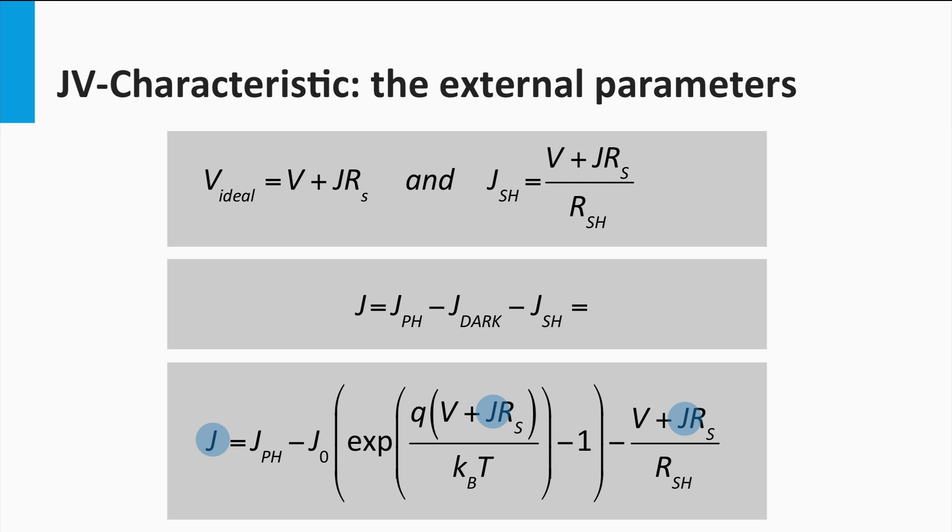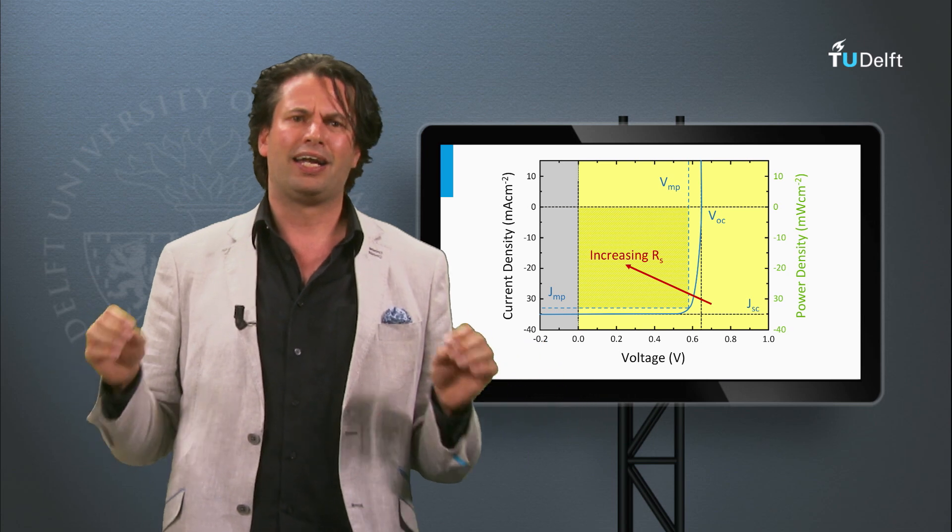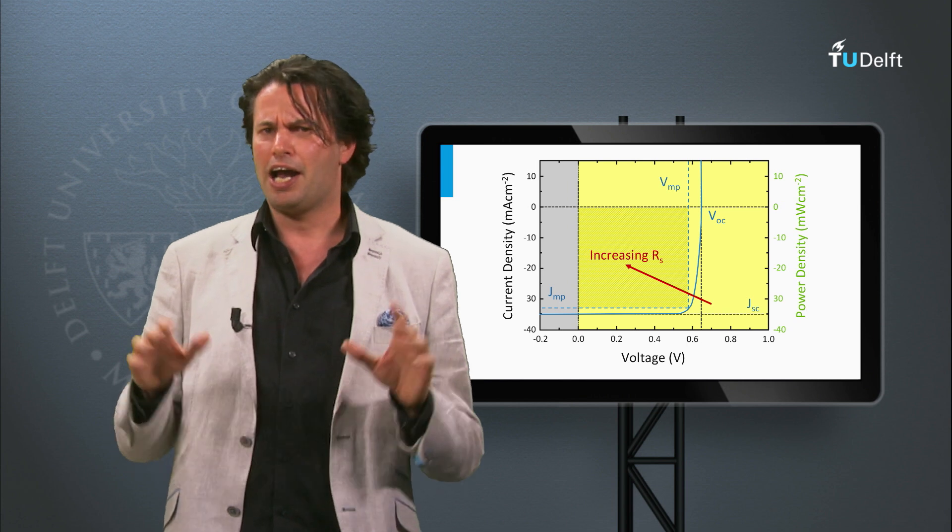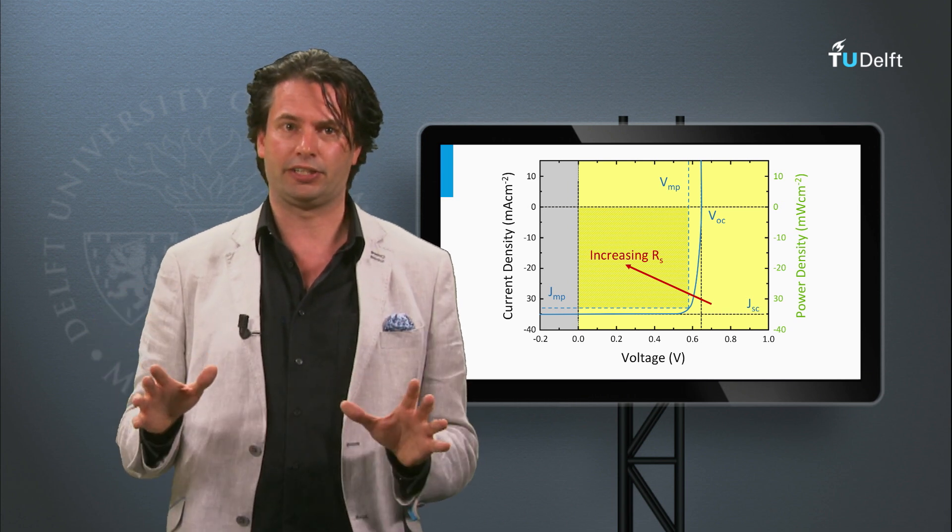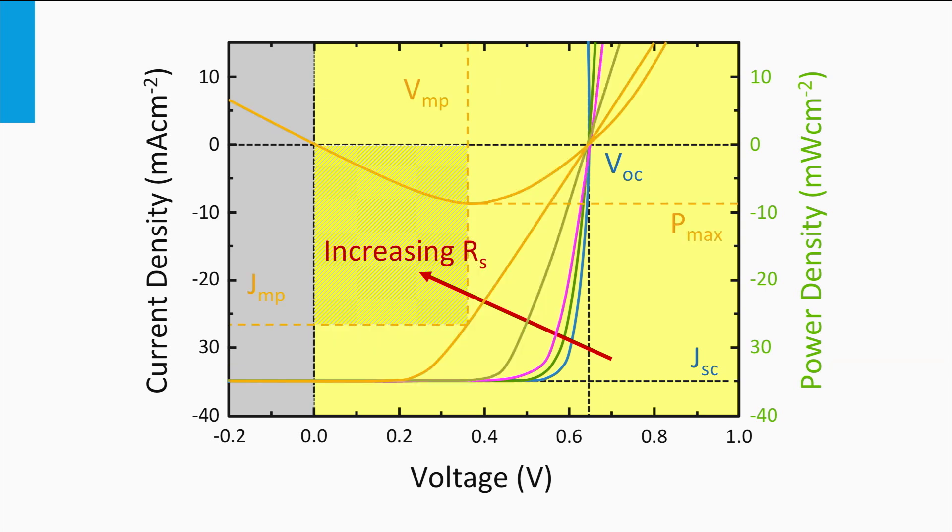How do the series and shunt resistance affect the J-V curve and the fill factor? Let's start with the J-V curve of an ideal p-n junction as shown in this figure. Now we are going to increase the series resistance. As you see, the slope around the open circuit voltage point starts to become less steep. The larger the series resistance, the less steep the slope will be. Furthermore, the maximum power point is affected as well by increasing the series resistance. The larger the series resistance, the smaller the maximum power point will be.